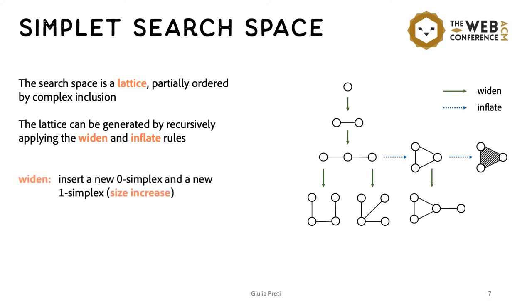The widen rule increases the size of the simplet by adding a new vertex and connecting it with an existing vertex in the simplet. So, for example, if we start from this blue node by applying widen, we add the green node and obtain this edge.